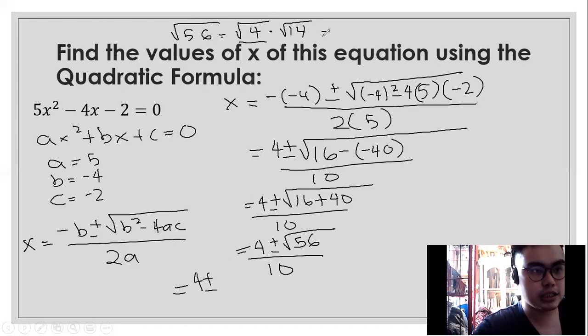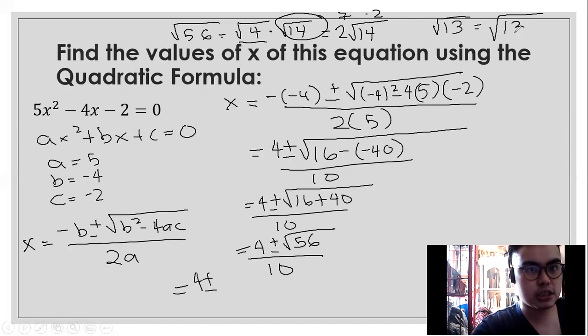The square root of 4 is 2. Is this a perfect square? Hindi. Anong factors ng 14? 7 and 2. Perfect square ba yung dalawa? Hindi. So, iretain na natin ng square root of 14. Magbibigay pa ako na isang example. If it's square root of 13, is it a perfect square? Wala. Hindi. Anong factors ng 13? Siyempre, 13 at 1. Perfect square ba yung dalawa? Wala. So, kung no conditions are met, we're going to copy this. As is na to. Going back to this solution, the square root of 56 is 2 square root of 14 over 10.